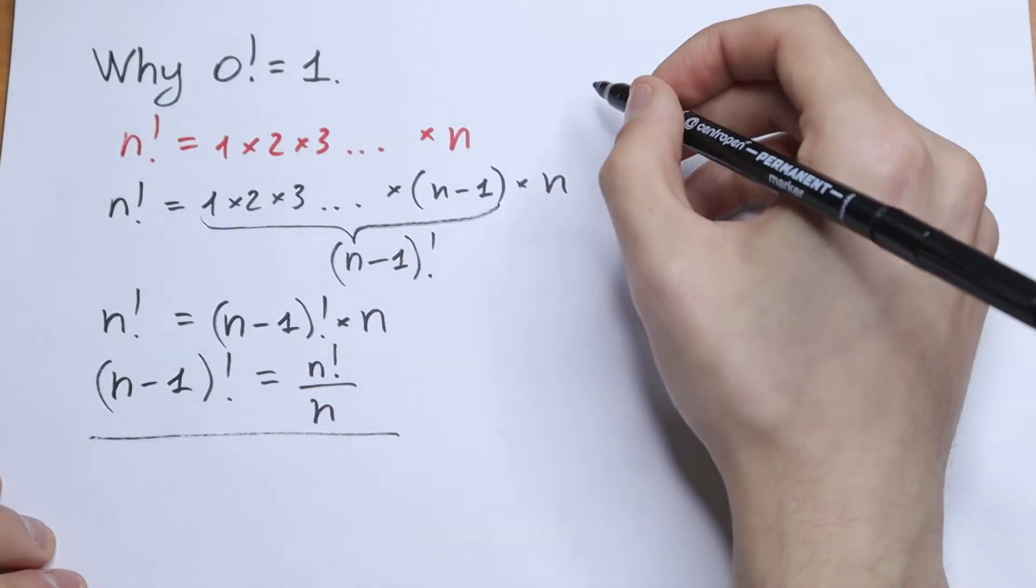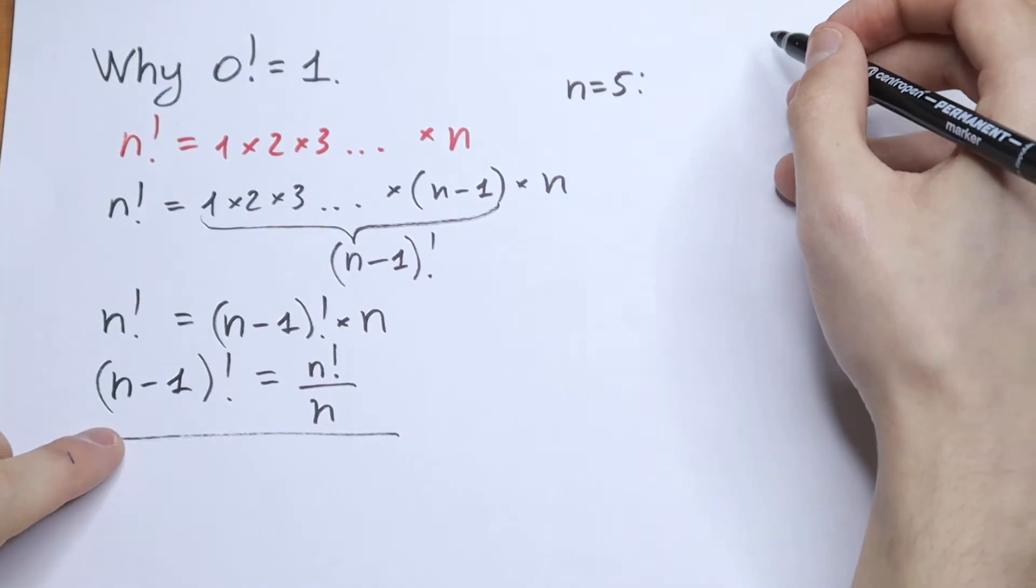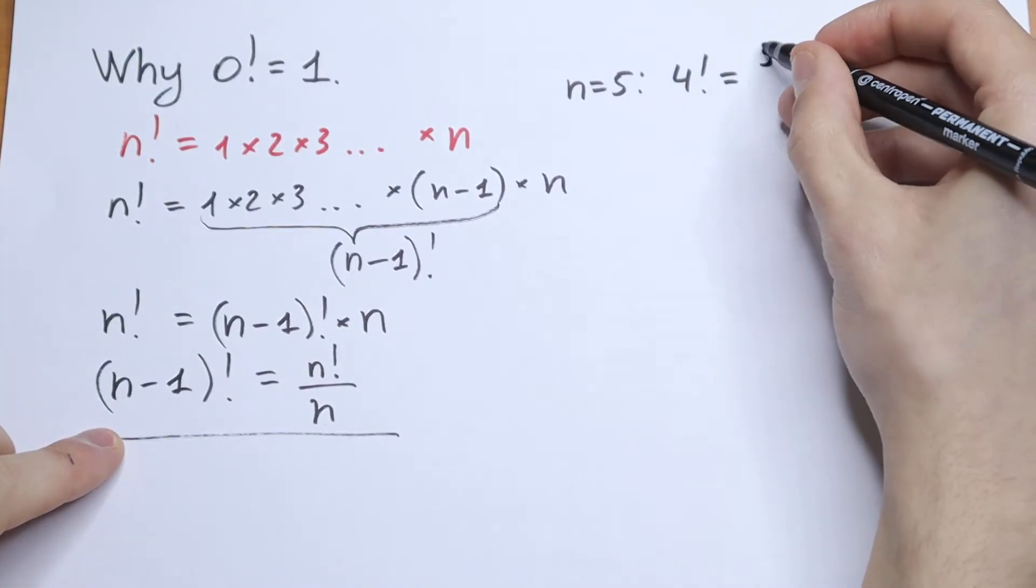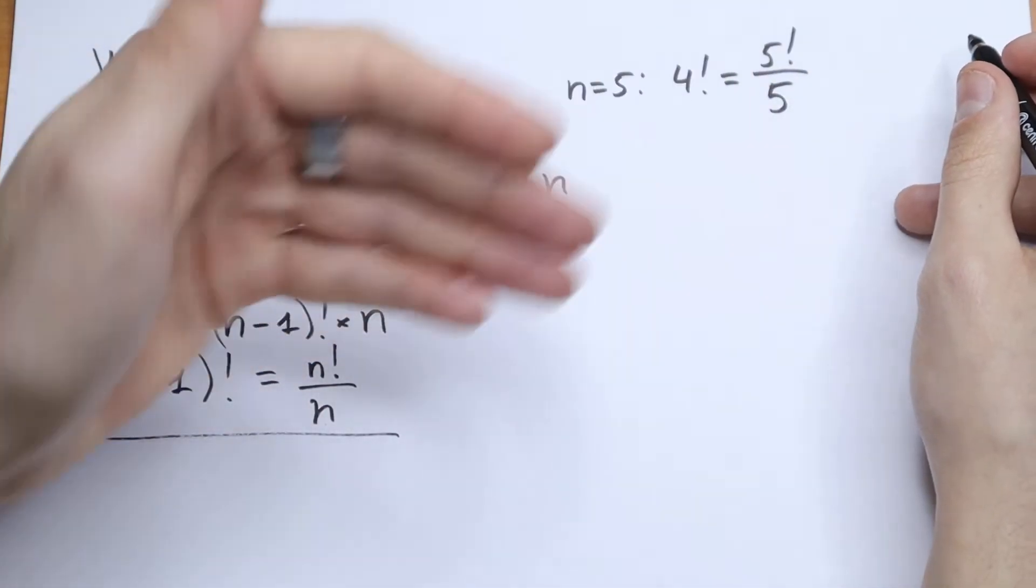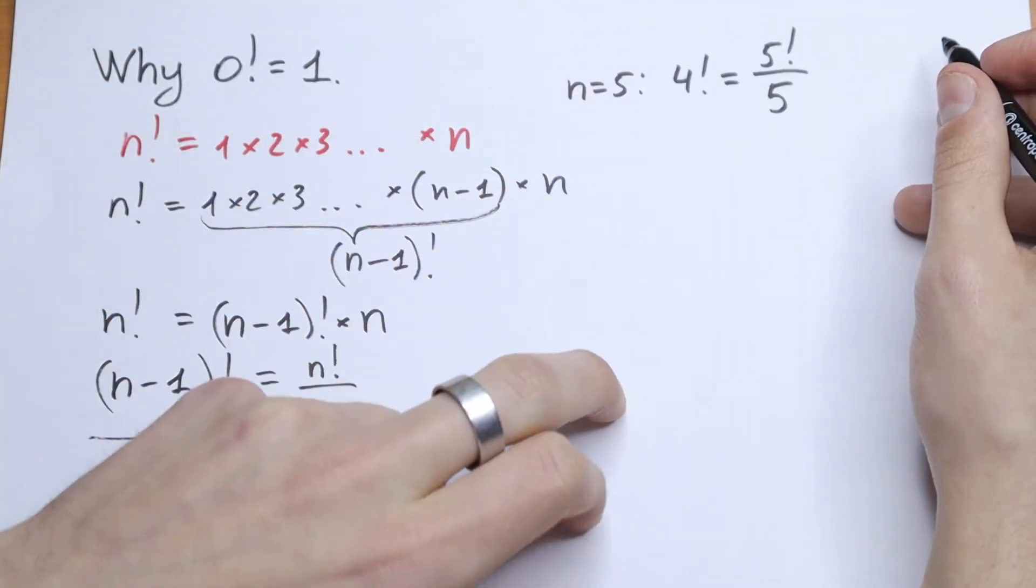If n equal to, for example, 5, what we will have? We will have that 4 factorial equal to 5 factorial dividing by 5. So this is good. And let's get closer and closer to 0 factorial.